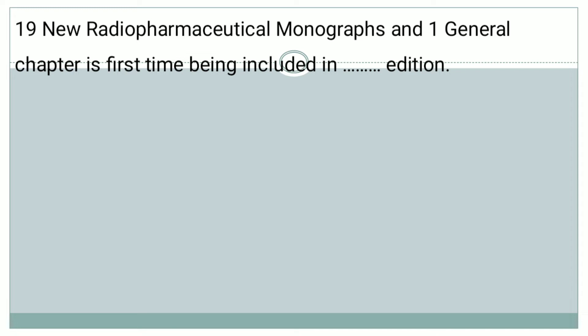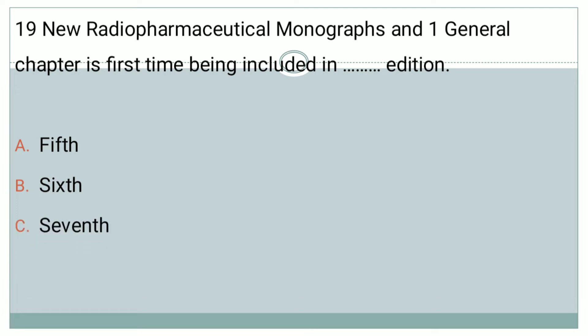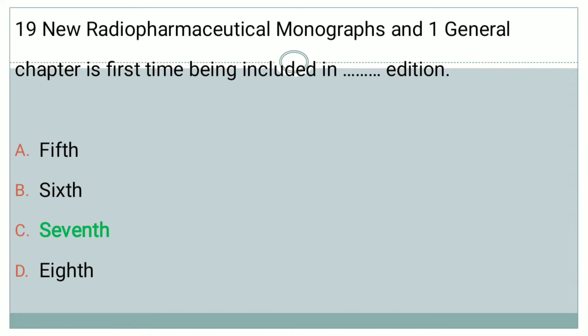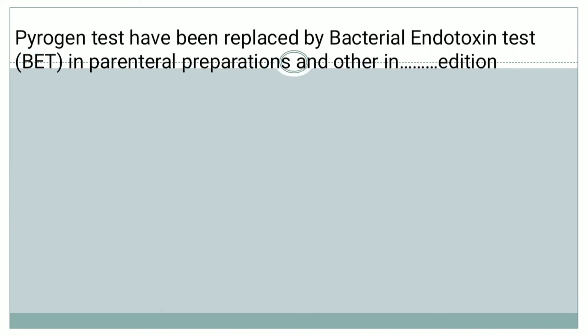The next question: Nineteen new radiopharmaceutical monographs and one general chapter were first time introduced in Dash edition. Options: A: 5th, B: 6th, C: 7th, D: 8th. Such type of questions can also be asked. The right answer is Option C, that is the 7th edition.